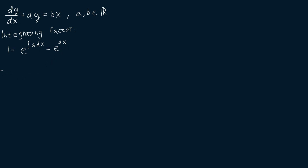Then let's multiply both sides of our equation by our integrating factor e to the ax. So we're going to get dy/dx times e to the ax plus a times e to the ax times y is equal to bx times e to the ax.